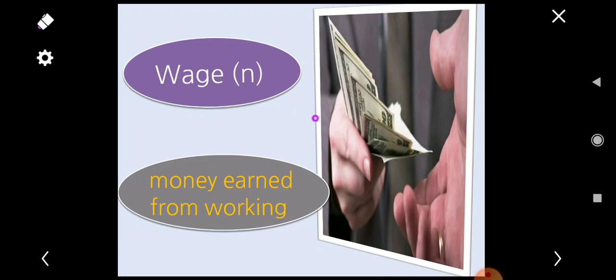Now we have wage. Wage, it's a noun. Wage means money earned from working. It's the money you receive in exchange for work. It can be weekly, monthly, or daily. While salary is a monthly salary.